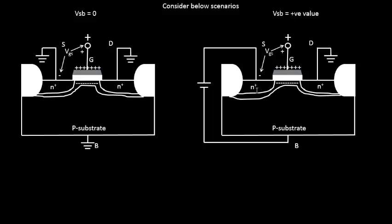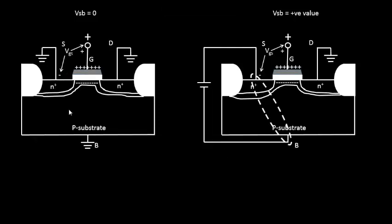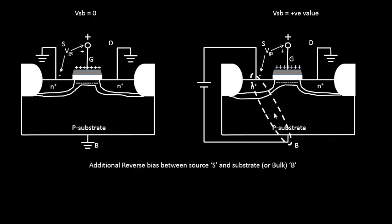The negative terminal of the PN junction diode is connected to the positive terminal of the battery, and the positive terminal of the PN junction diode is connected to the negative terminal of the battery. This arrangement is the classic reverse bias PN junction diode. In the case of a reverse bias PN junction diode, the depletion layer width is much greater than in the diode connected to ground, because there is an additional reverse bias applied to this PN junction diode.